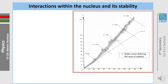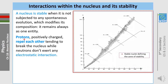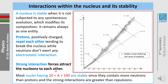Finally, regarding interactions within the nucleus and its stability: the nucleus is stable when it is not subjected to any spontaneous evolution that modifies its composition. Protons are positively charged and repel each other, tending to break the nucleus, while neutrons do not exert any electrostatic interaction. Strong nuclear forces attract nucleons to each other. Most nuclei with mass numbers between 20 and 190 are stable since they contain more neutrons than protons and the strong interactions outweigh repulsions.